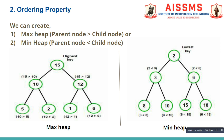Now let us see the example of min heap. In this second figure, the value of the root node is 2, which is lesser than its child nodes 3 and 6. The value of parent node 3 is lesser than its child nodes 8 and 10, and the value of parent node 6 is lesser than its child nodes 15 and 18.